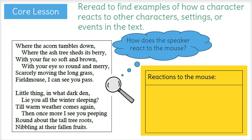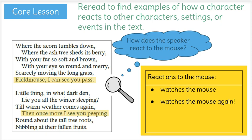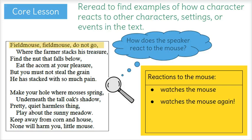Right here in line six, the speaker is watching the mouse. Then the same thing happens again on line 10 — he's watching the mouse again. Now on line 13 in the third stanza, he does something really different. He says, 'Field mouse, field mouse, do not go.' So here he's actually talking right to the mouse. Then for the rest of stanza three and stanza four, it seems like the speaker is giving the mouse a lot of advice about what he should be doing.